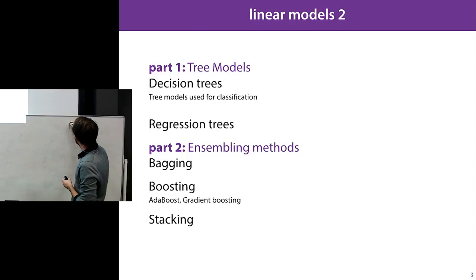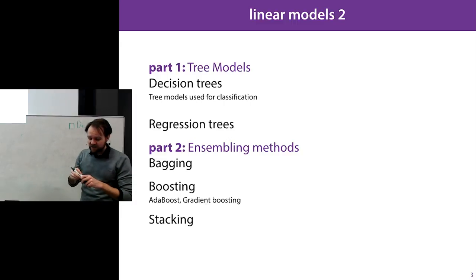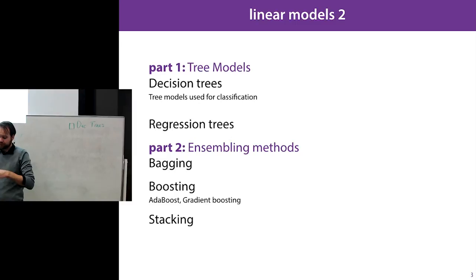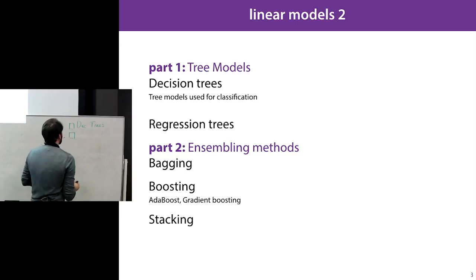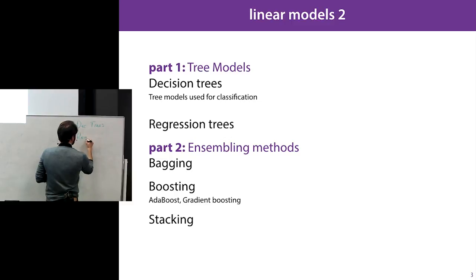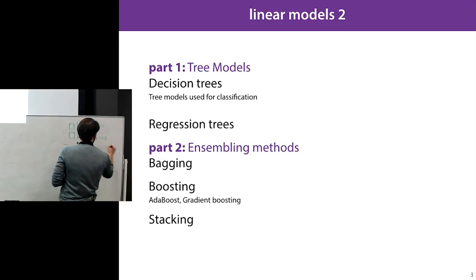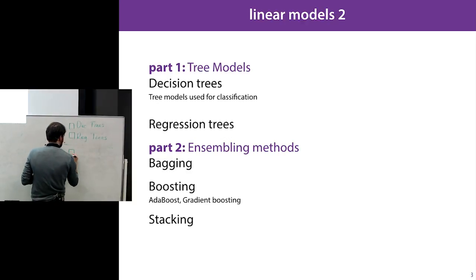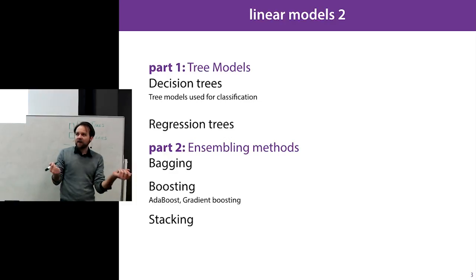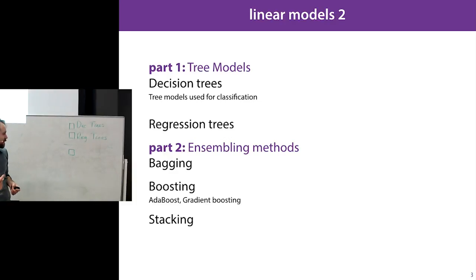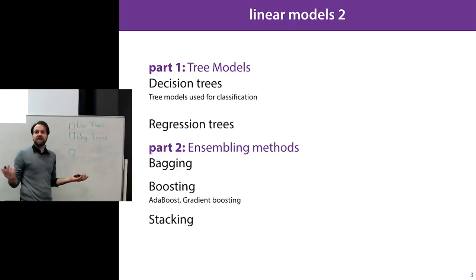Step one is to talk about decision trees. We've seen them already in the first lecture, but I didn't explain how to train them. We'll cover that today, along with regression trees for predicting numeric target values. Then we'll talk about ensembling methods — the idea of training a bunch of models, asking all of them for a prediction, and combining their judgments into one, hoping to get a better result than any single model.